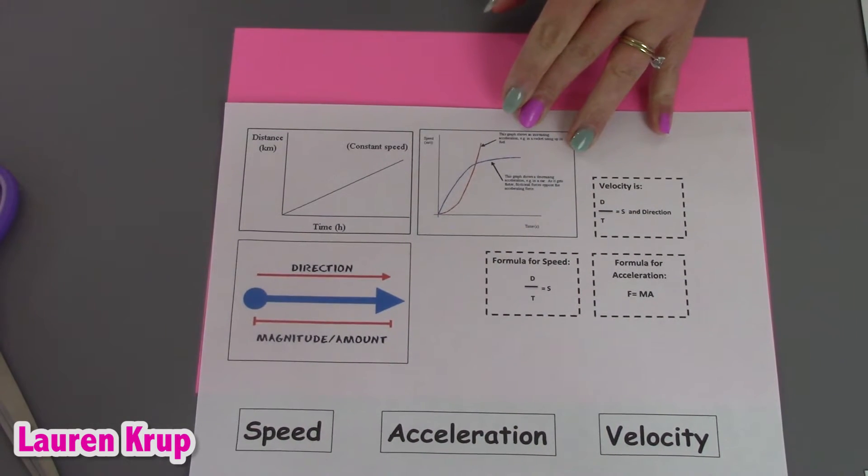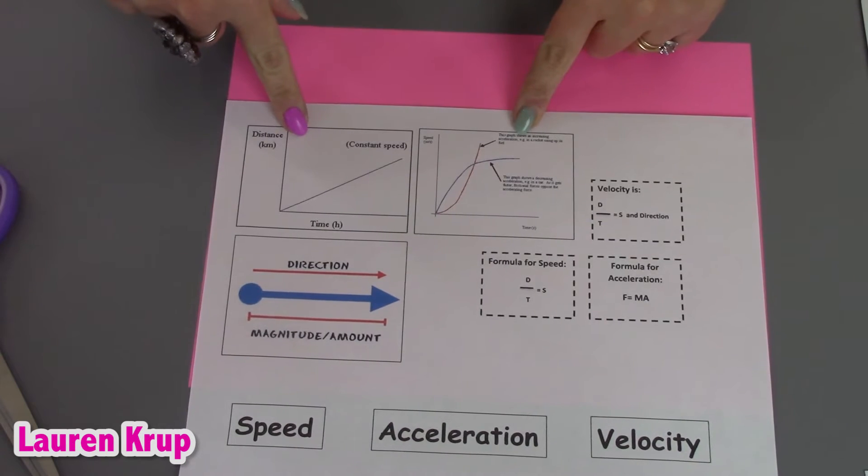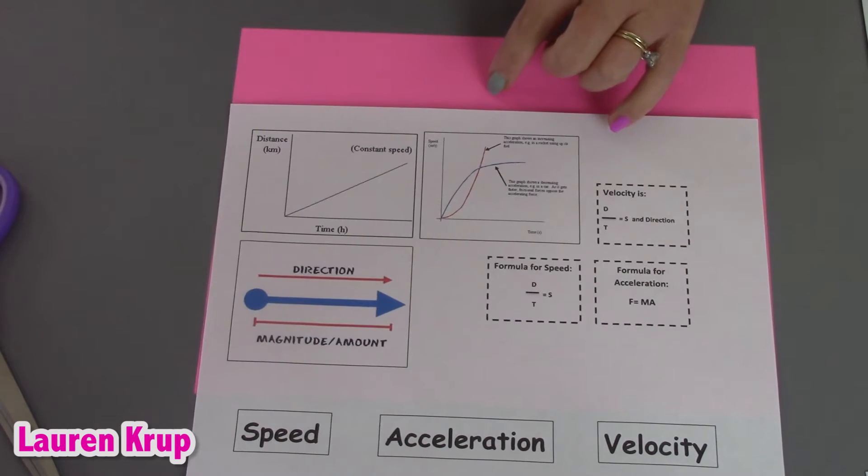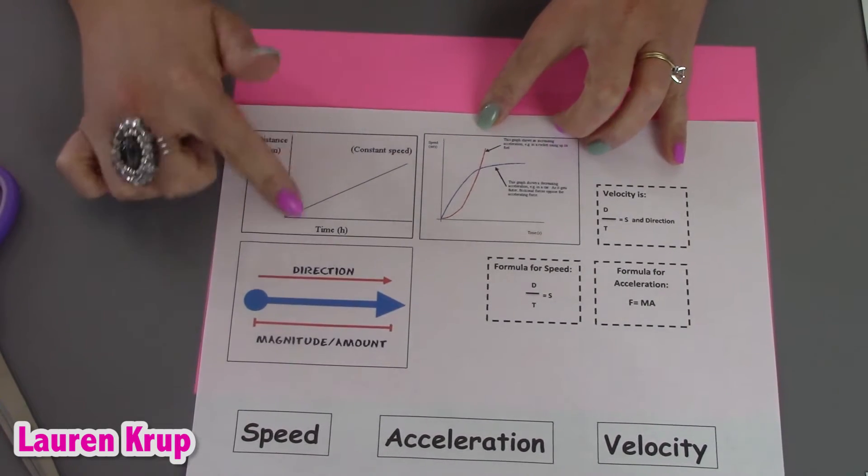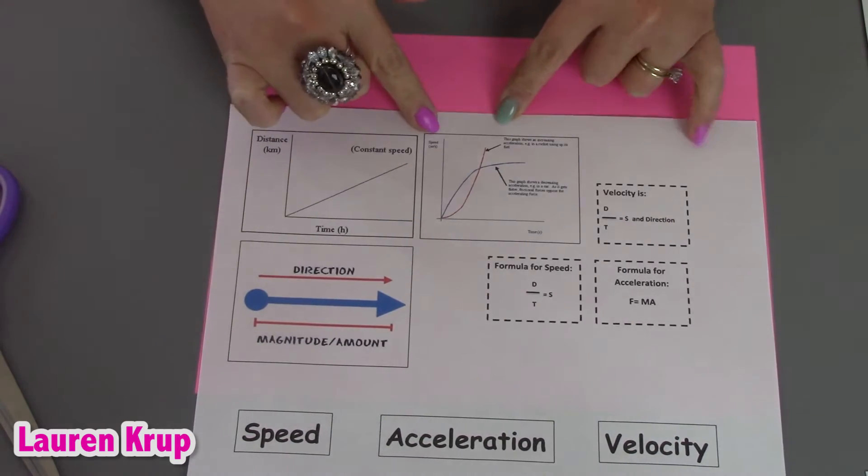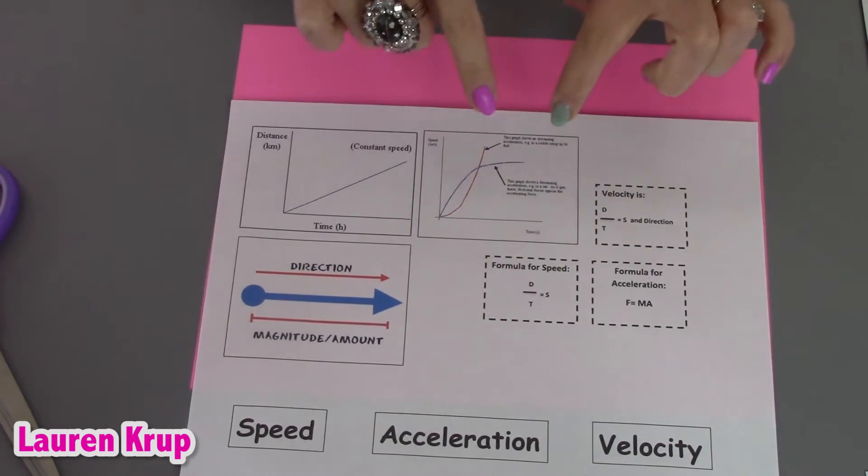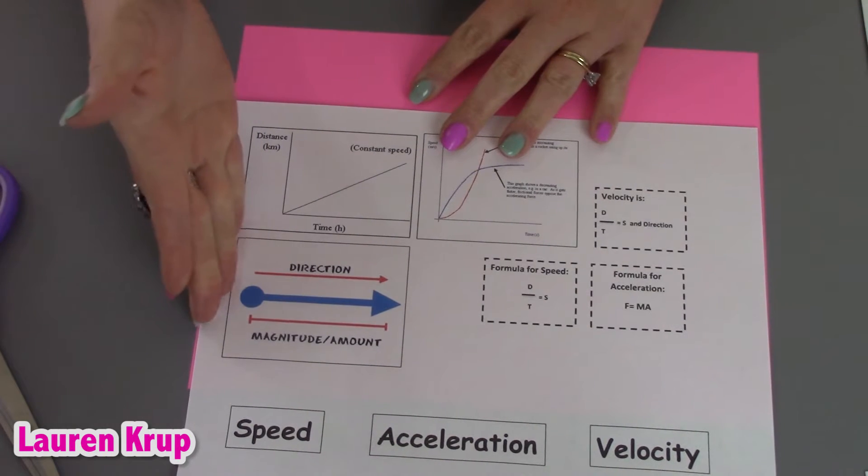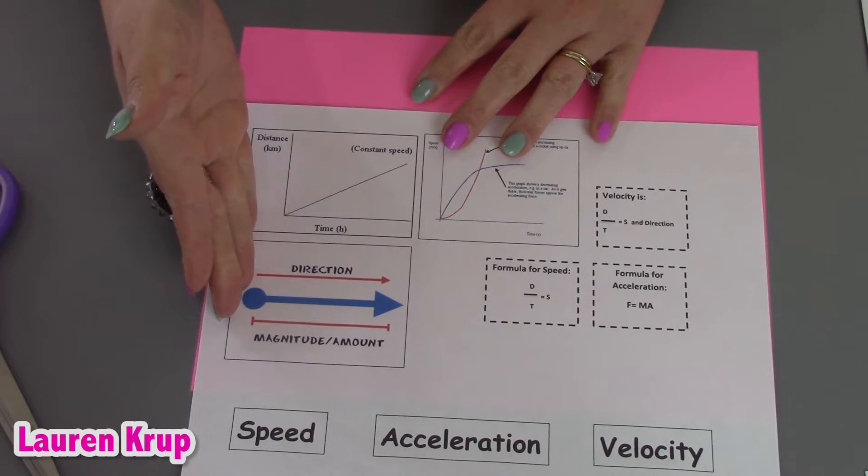What I have my students do in the classroom is I will take a post-it note and I have them make the graph, make the different motion graphs. I have them make a constant speed, a distance-time graph, and then a speed-time graph to show acceleration. And you can have them do a number line and draw a vector to show velocity.